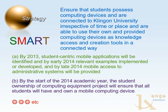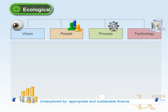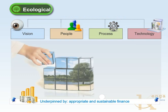Here's an example of a SMART goal: 'Ensure that students possess computing devices and are connected to the Klingon University irrespective of time or place, and are able to use their own and provided computing devices as knowledge access and creation tools in a connected way.' You then unpack that into smart goals — by 2013, student-centric mobile applications will be identified; by early 2014, relevant examples implemented or developed; by late 2014, mobile access to administrative systems will be provided. These are specific, time-bound, achievable, and measurable. Without this as part of your vision development, you'll have very limited impact.